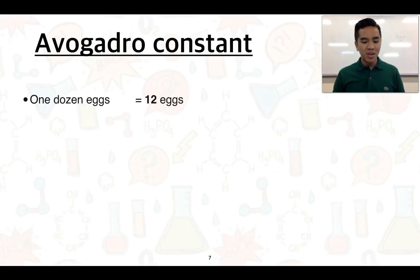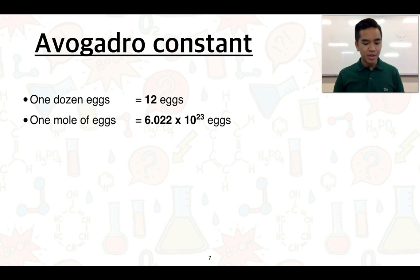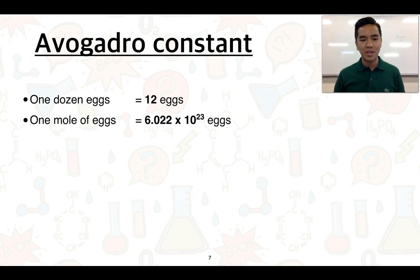We can make some comparisons to the dozen. If we say that we have one dozen eggs, that's equivalent to 12 eggs. Therefore, if we have one mole of eggs, we have 6.022 × 10²³ eggs.